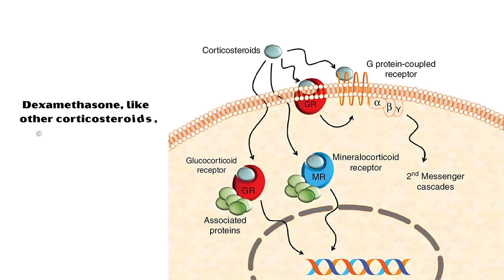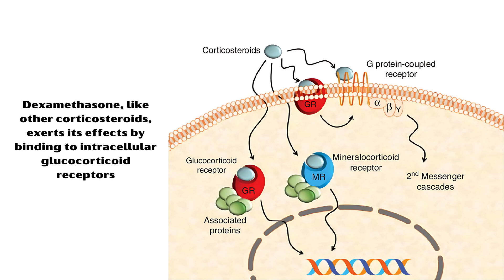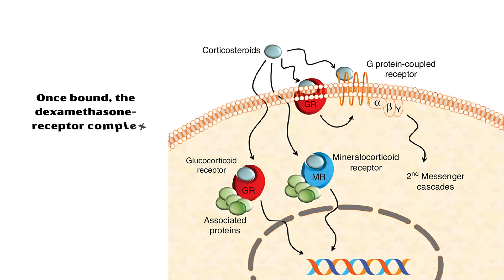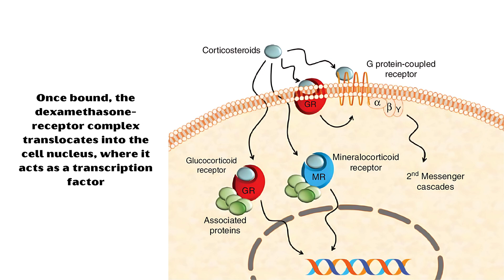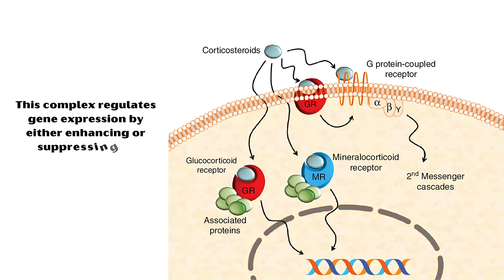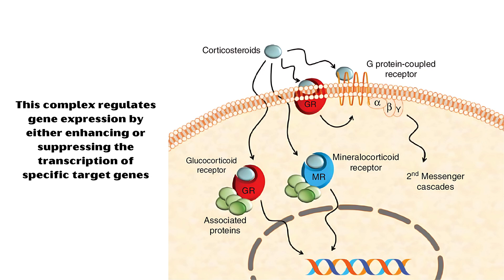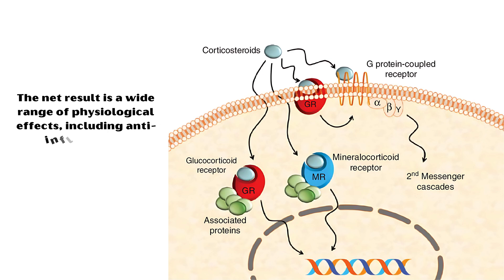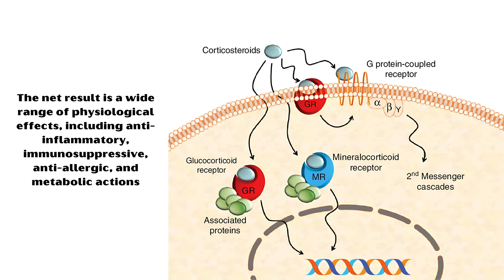Dexamethasone, like other corticosteroids, exerts its effects by binding to intracellular glucocorticoid receptors. Once bound, the dexamethasone-receptor complex translocates into the cell nucleus, where it acts as a transcription factor. This complex regulates gene expression by either enhancing or suppressing the transcription of specific target genes. The net result is a wide range of physiological effects, including anti-inflammatory, immunosuppressive, anti-allergic, and metabolic actions.